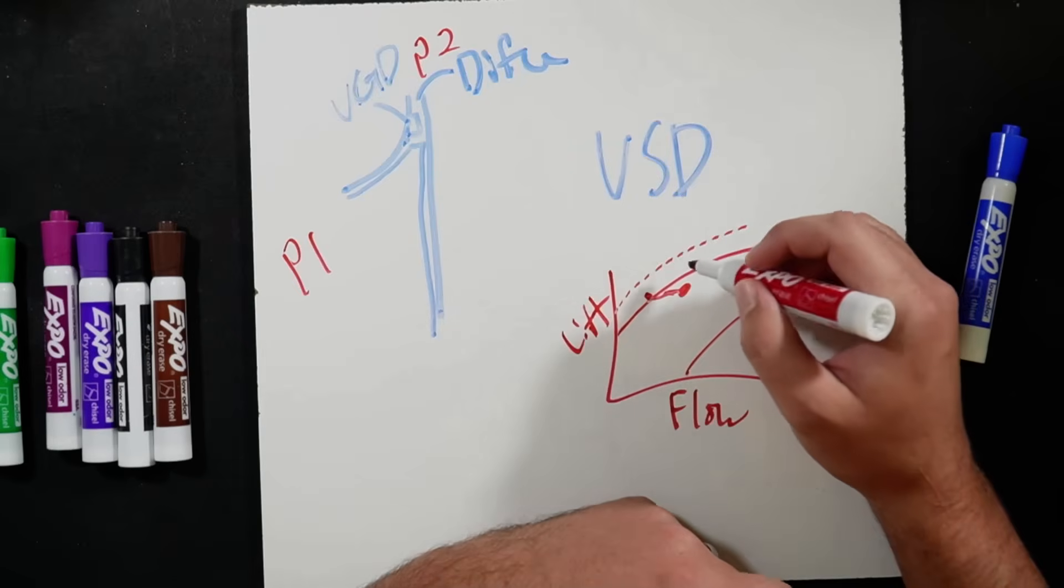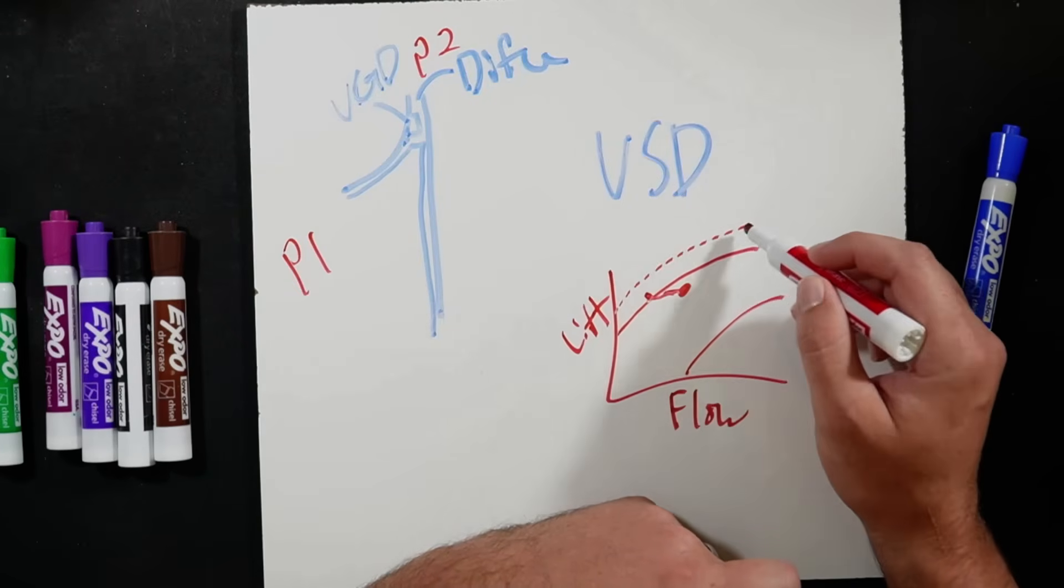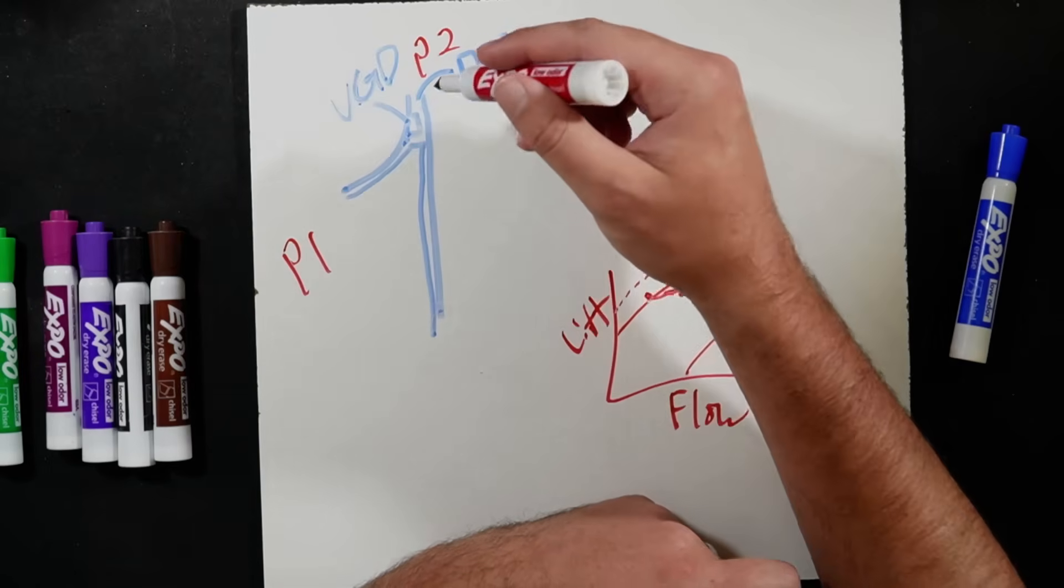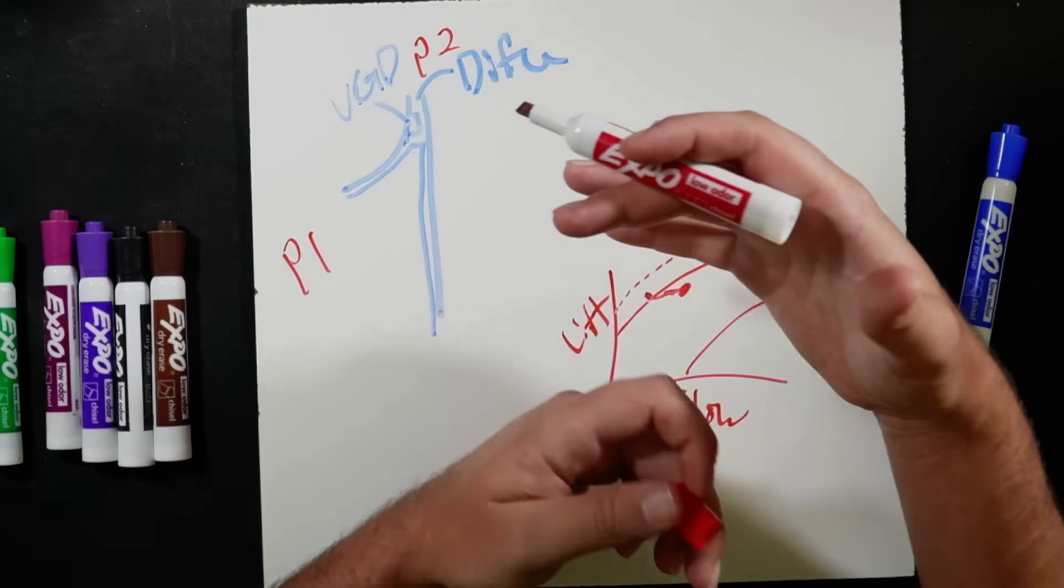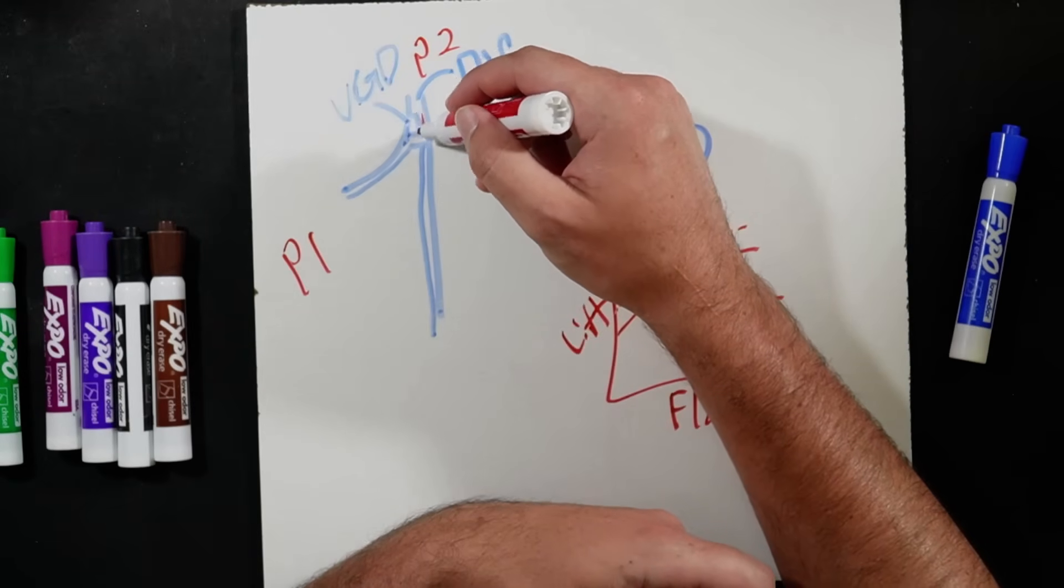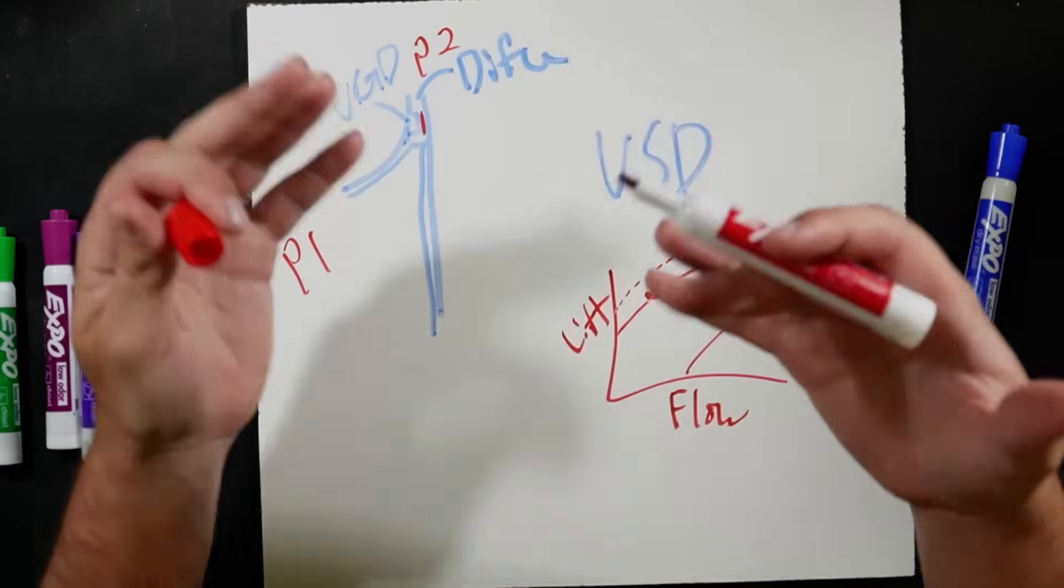Now the other thing is we do reduce flow. So part of that VGD is it does cut down on how much flow is able to go through that diffusion gap because it does become a physical block. And so our little gap here that we can flow through in the diffuser does become smaller.